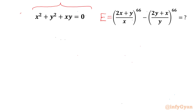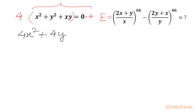So let's multiply our equation by 4 on both sides. Now we will expand the LHS. We multiply 4 with x squared to get 4x squared, 4 times y squared gives 4y squared, 4 times xy gives 4xy, and the RHS will be 0.